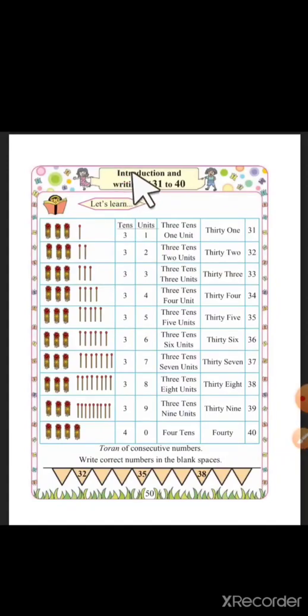Now, introduction and writing of 31 to 40. 3 tens, 30 and 1 unit, 31. 3 tens, 30, 2 units, 32.